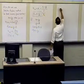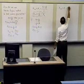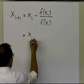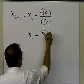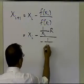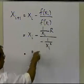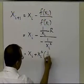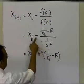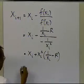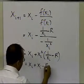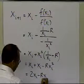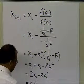Now, if I substitute it back into my Newton-Raphson method formula, I'll get x of i plus one equals x of i minus f of xi divided by f prime of xi. So f of xi is one divided by xi minus r, divided by minus one divided by xi squared. Simplifying: this becomes plus xi squared times (one divided by xi minus r), which gives xi plus xi squared times (one divided by xi minus r), and simplifying further gives 2 xi minus r times xi squared, then taking xi common gives xi times (2 minus r times xi).